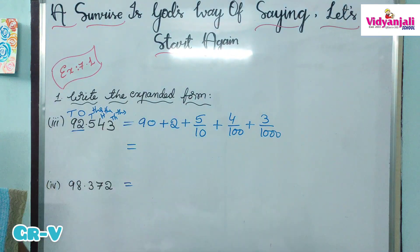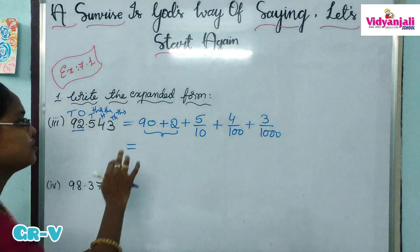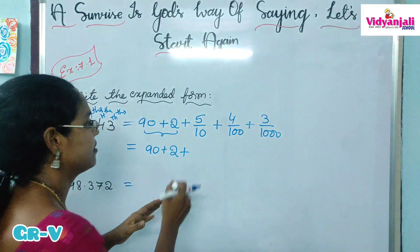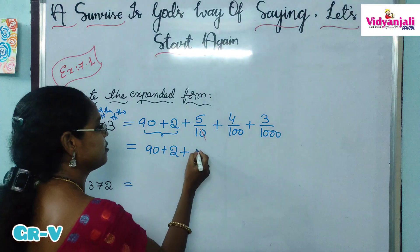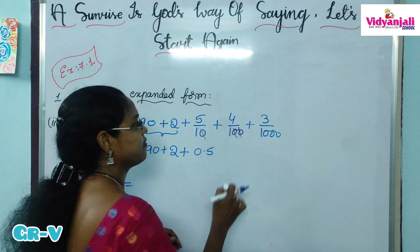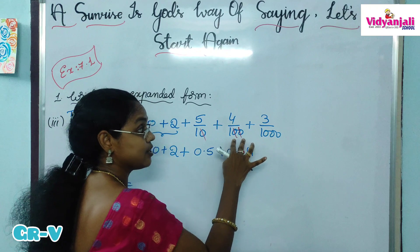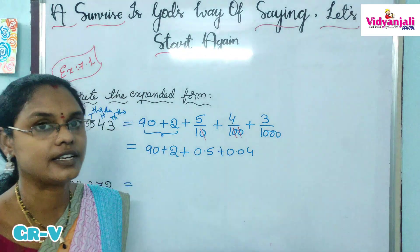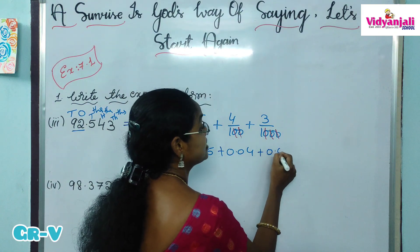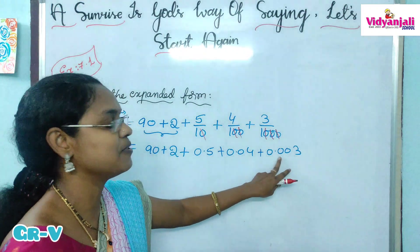Shall we write the decimal expansion also? In decimal expansion, the whole part never changes. So 90 plus 2 will be as it is. 5 by 10 — what is the decimal form? 0.5, because 1 digit, 1 zero. What is the decimal form of 4 by 100? 0.04, because 2 zeros, so 2 digits before the point. What is the decimal form of 3 by 1000? 0.003, because 3 digits in the decimal part, so 3 digits before the point.